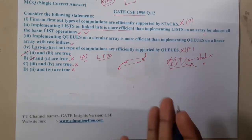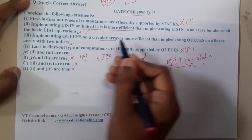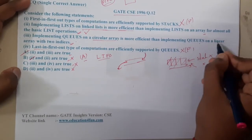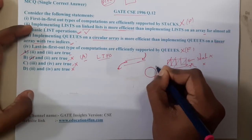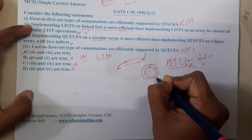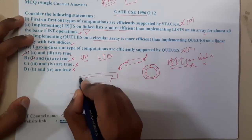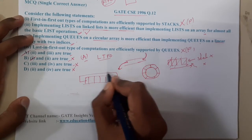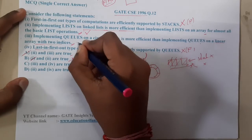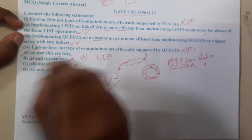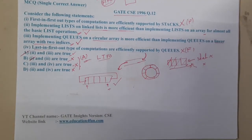Similarly, implementing queues on a circular array is more efficient than on a linear array with two indices. In a circular array, the last address points back to the first address, so you automatically come back to the same location — this is ideal for queue implementation. So statements (ii) and (iii) are both correct, and statements (i) and (iv) are both wrong. Therefore, option A is confirmed correct.